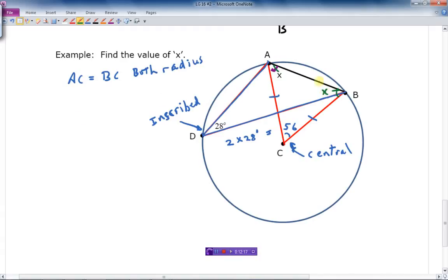So 2X plus 56 has to equal what if it's a triangle? Well, the angles of a triangle have to give me 180 degrees. Well, how do I find X? Well, let's get rid of the 56. So I'm going to subtract 56. So minus 56.